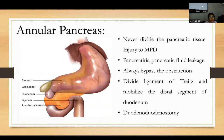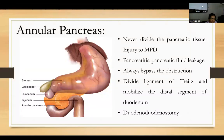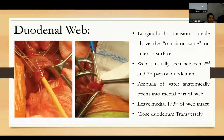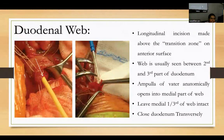For annular pancreas, we never divide the pancreatic tissue, as it may injure the main pancreatic duct, causing pancreatitis or pancreatic fluid leak. We always bypass the obstruction by dividing the ligament of Treitz to mobilize the distal duodenum, followed by duodenoduodenostomy. For duodenal web, a longitudinal incision is made above the transition zone on the anterior surface of the duodenum. The web is usually found between the second and third part. The ampulla opens into the medial part of the web, so the web is excised laterally, leaving the medial one-third intact, and the duodenum is closed transversely.